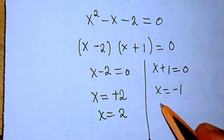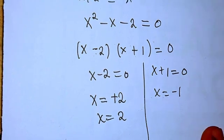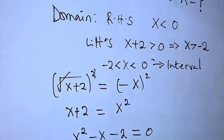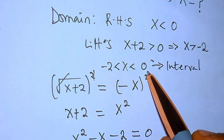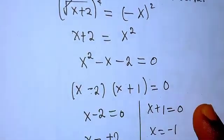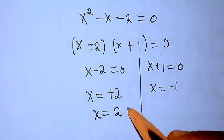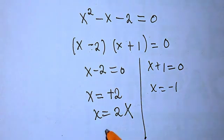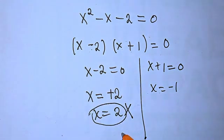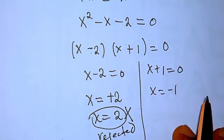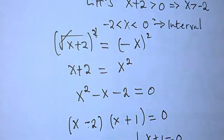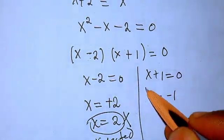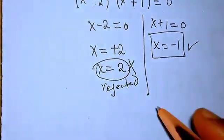Now let's check these values against our domain. Our domain says x must be greater than minus 2 and less than zero. Looking at x equals 2 — it does not belong to that interval, so x equals 2 is rejected. Looking at x equals minus 1 — it does fall within the interval, so x equals minus 1 is our solution.